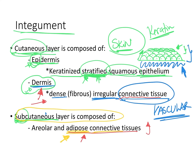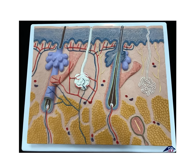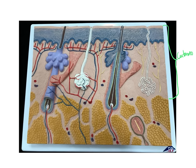In our human anatomy lab, we have two main skin models. I believe it's very useful to go over the different layers of the integument and the structures using models you will also be exposed to in the lab. The integument is composed of two main layers: the cutaneous layer, also known as skin, and the subcutaneous layer.